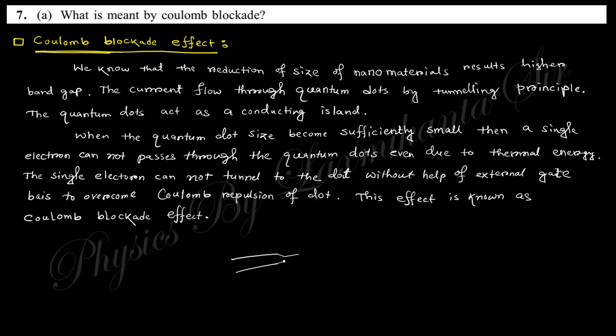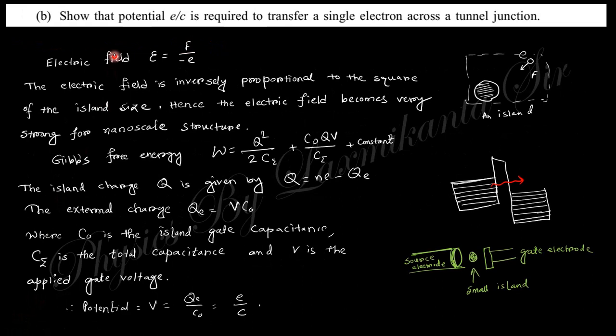You can see there is a conducting material, and between their path there is a quantum dot. If you reduce this quantum dot size, the band gap is higher. This reduction of the quantum dot happens in such a way that a single electron cannot pass through. This effect is known as the coulomb blockade effect. In this situation, no current flows through this wire. That's why this is called coulomb blockade.